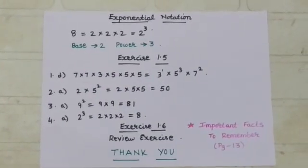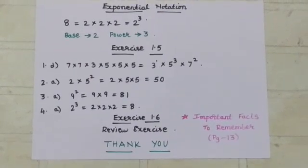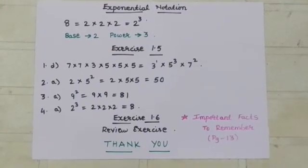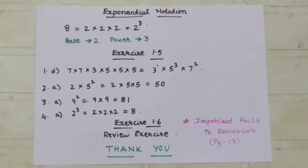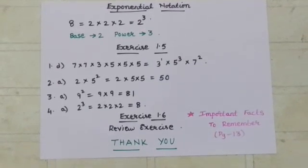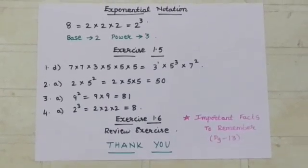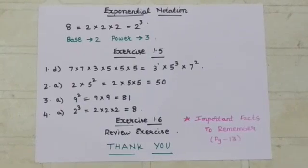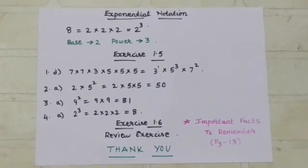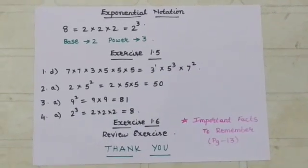Now we move on to the next concept, exponential notation. That is, suppose if 8 is there, we write it as 2 into 2 into 2. That is 2 to the power 3. 2 is written 3 times. 8 is called the third power of 2. 2 is called the base and 3 is its power. We read 2 cube as 2 raised to the power 3. 3 is also known as index or power.